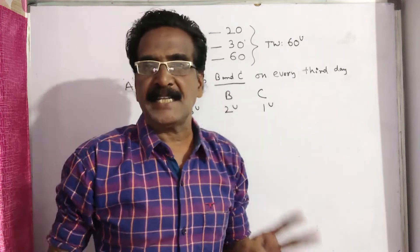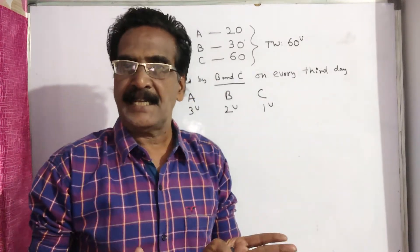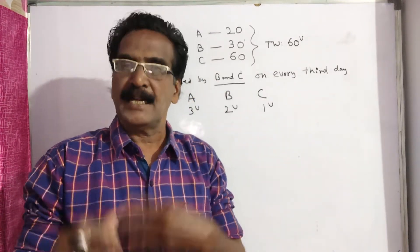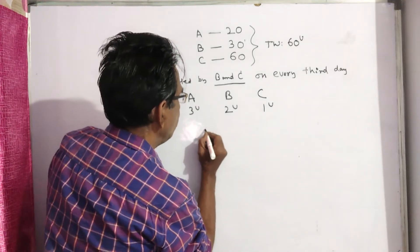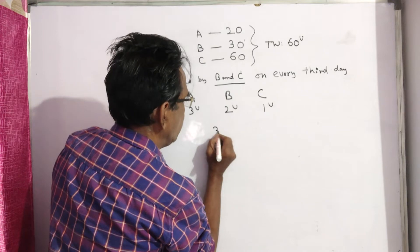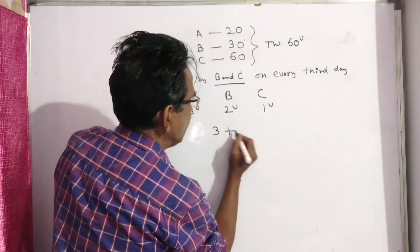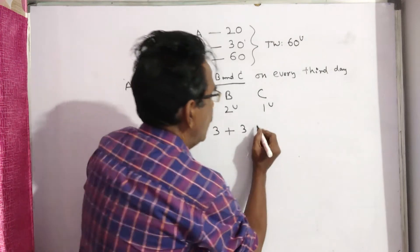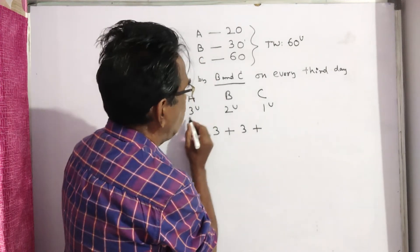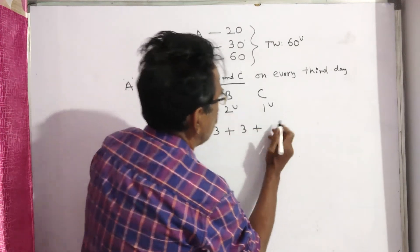A is assisted by B and C on every third day means first day and second day A works alone, and third day A plus B plus C work together. First day A completes 3 units of work, second day again A completes 3 units of work, and third day A plus B plus C complete 3 plus 2 plus 1, which is 6 units.